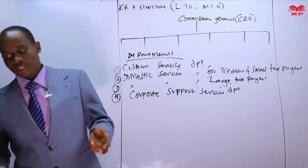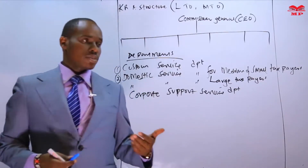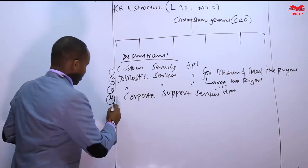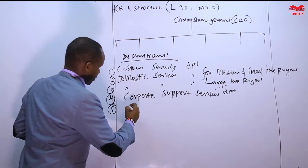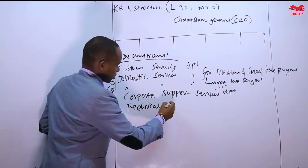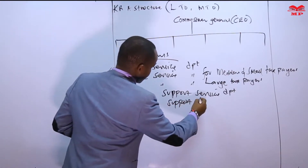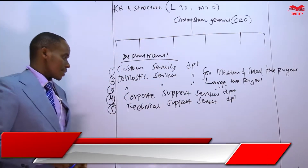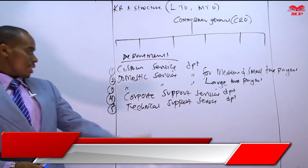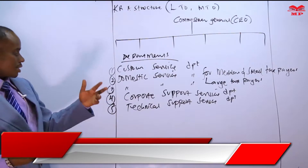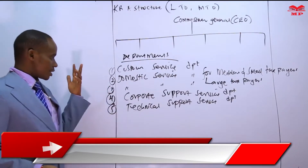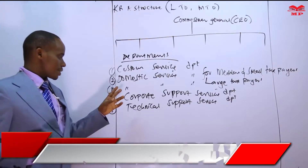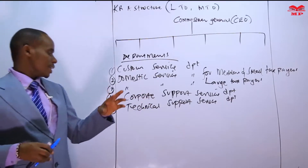Department number five is the Technical Support Service Department. This particular department deals with IT matters. In the revenue authorities, because of changes in technology and modernization projects, we no longer have paperwork. So we also have a department that is supporting this particular online system.